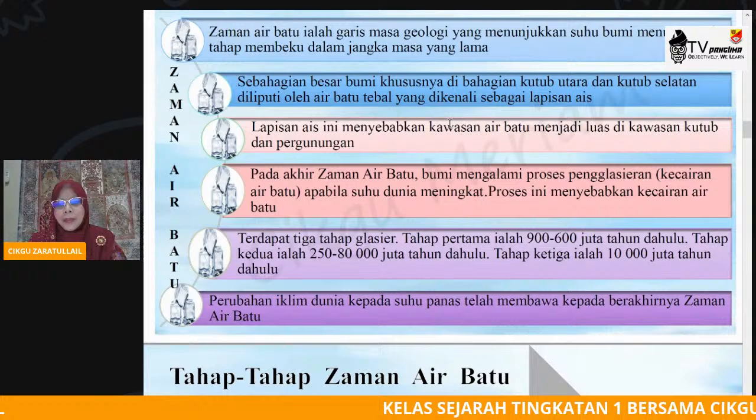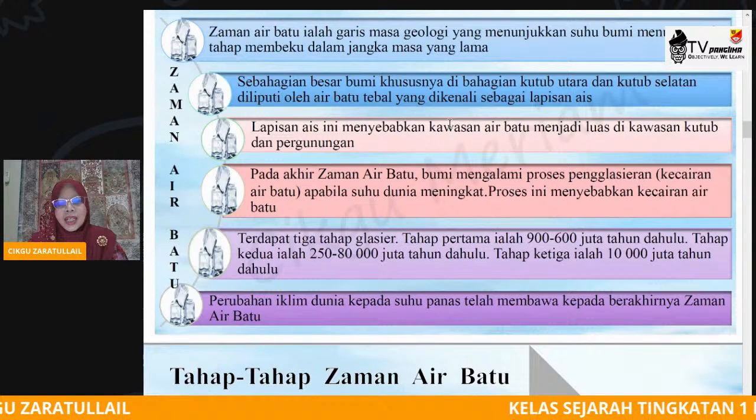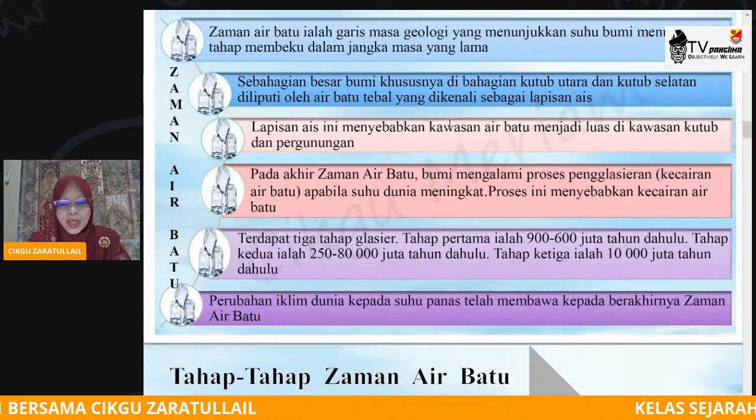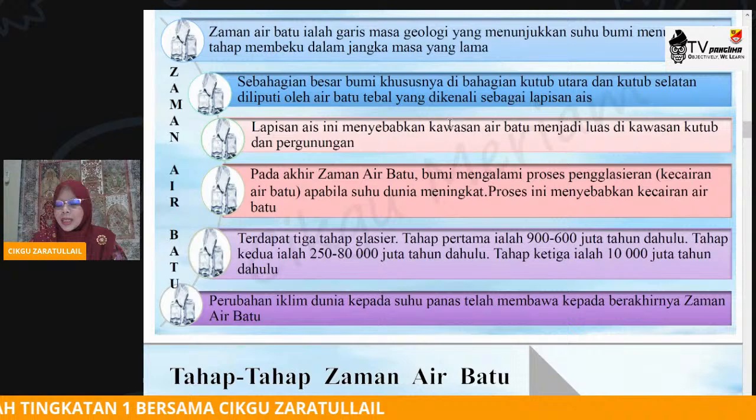Tahap yang pertama berlaku antara 900 hingga 600 juta tahun dahulu. Maknanya bumi kita ini sudah wujud lebih daripada 900 juta tahun dahulu. Bayangkan, usia kita sahaja nak mencapai umur 80 tahun pun boleh dikira berapa ramai. Jadi muka bumi kita sudah berusia 900 juta tahun dahulu.